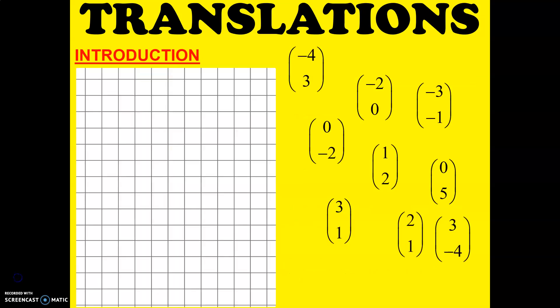Let's cite an example. This is the vector. Zero for X because you don't go to the right and you don't go to the left, but you go up. So that is 0, 5 — going up 5 steps.